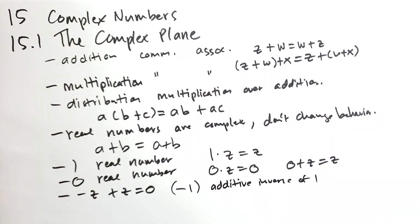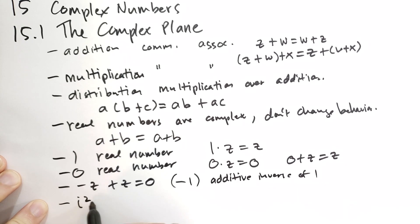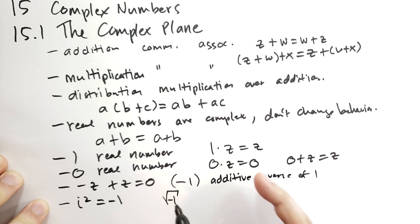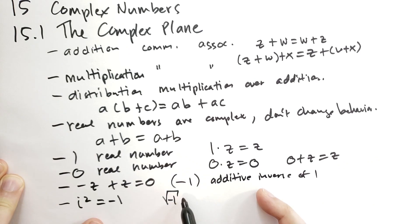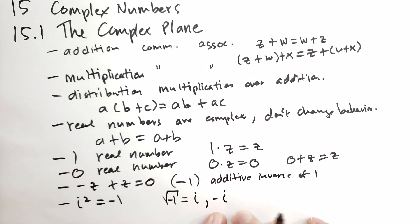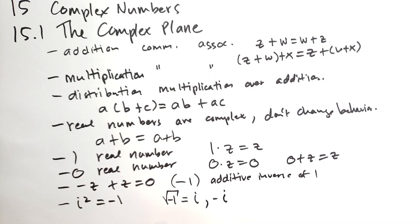There exists a complex number i such that i squared is equal to minus one. Note, however, that the square root of minus one under this system can be i or negative i — if you take negative i and square it, you also get negative one. This confuses a lot of people, and there are actually people on the internet saying that the complex numbers don't work because of this.